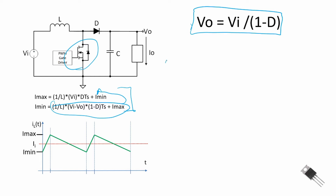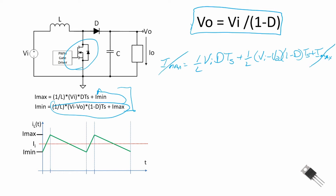We derive this by substituting I_min into the equation, which results in: I_max = (1/L)·V_in·D·T_s + (1/L)·(V_in − V_out)·(1−D)·T_s + I_max. The I_max terms on both sides cancel out. Multiplying through by L cancels the L's, and dividing by T_s cancels the T_s terms, leaving: 0 = V_in·D + (V_in − V_out)·(1 − D).